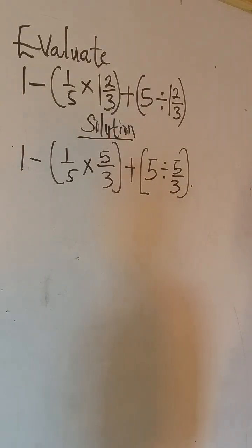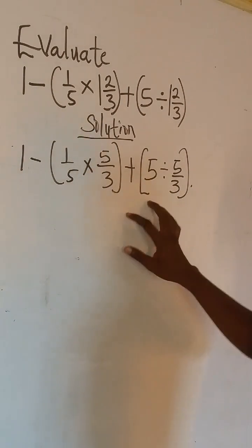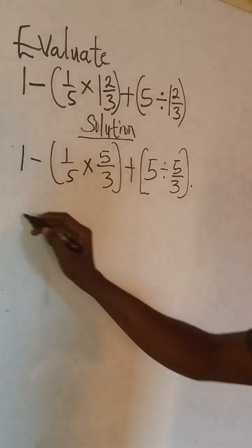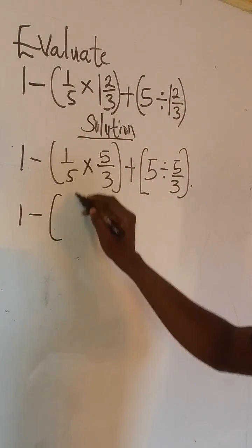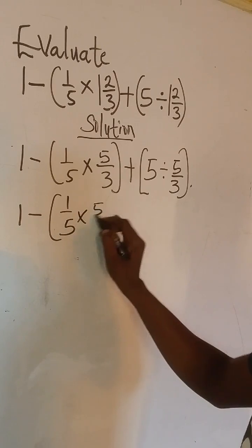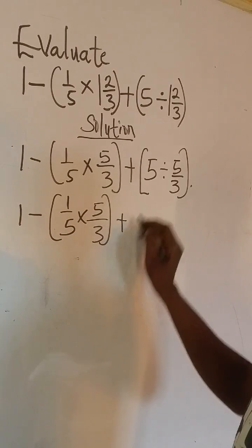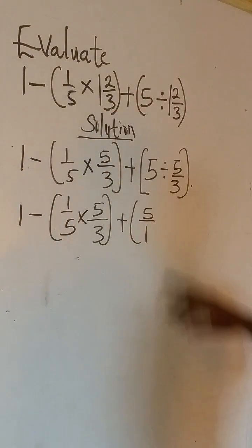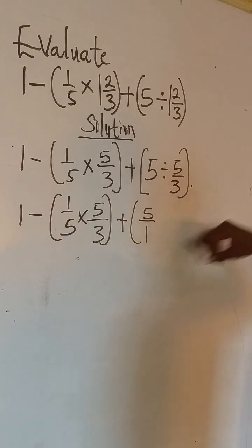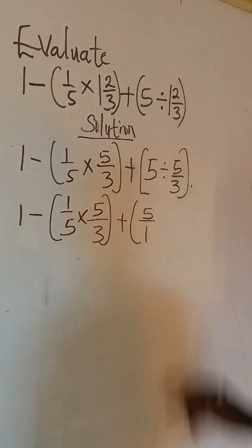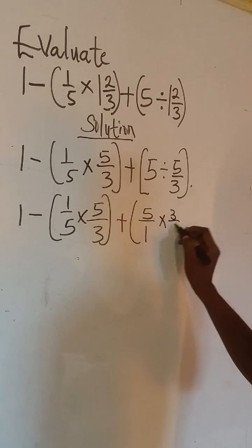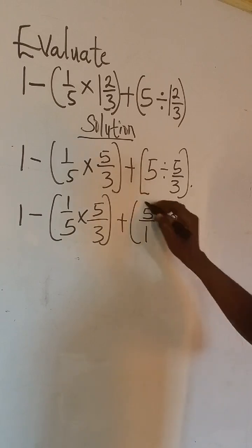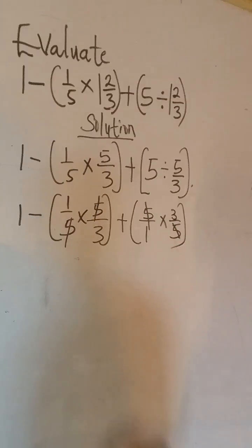Then we solve the numbers in the brackets. So we have 1 minus 1 over 5 times 5 over 3 plus 5 over 1. Now if division turns to multiplication it becomes a reciprocal. That's times 3 over 5. So here 5 times 5, 5 times 5.